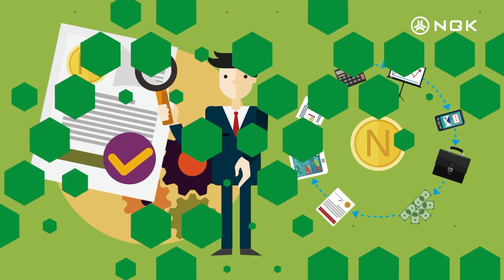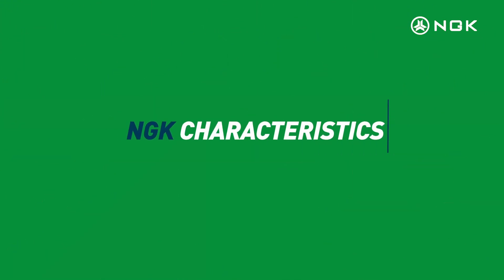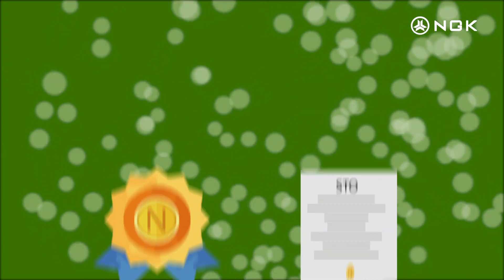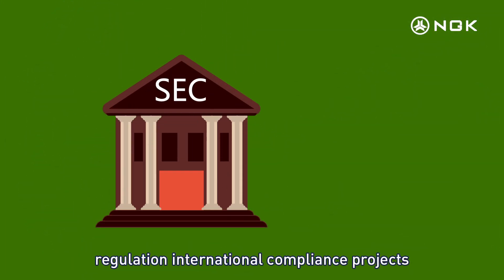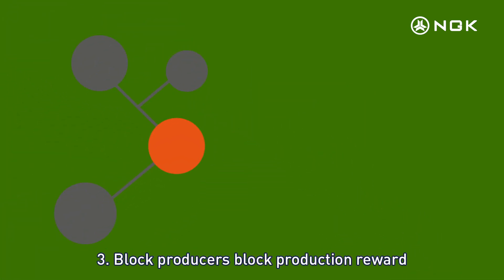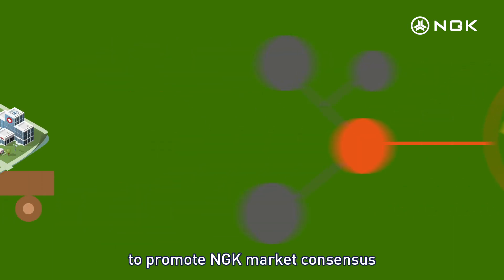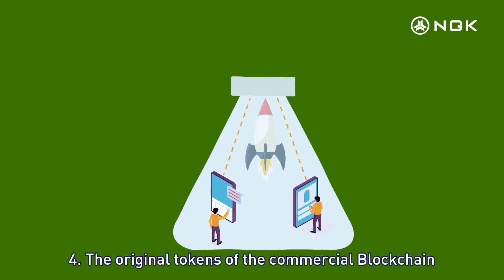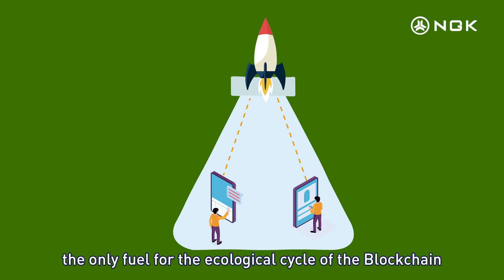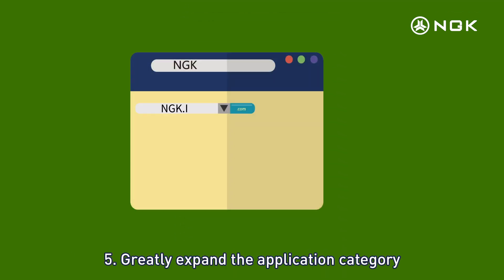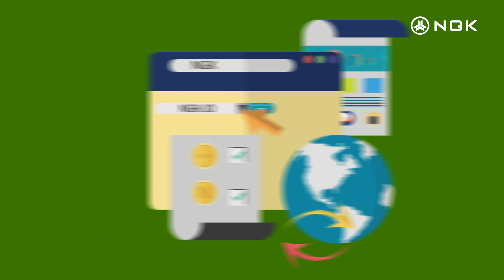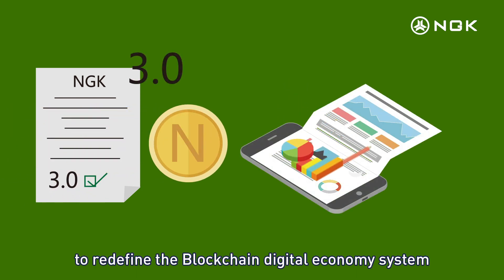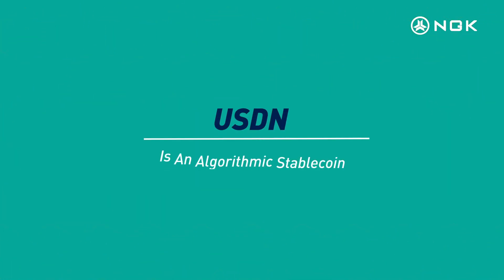The distribution mechanism is open and transparent, meaning NGK is a truly community-driven blockchain project. NGK characteristics: one, decentralized digital economic equity certificate STO issuance equity model; two, American SEC and international compliance; three, block producer rewards promoting NGK market consensus through community incentives; four, original token of commercial blockchain as the only fuel for the ecological cycle; five, greatly expanding the application category in digital finance; six, blockchain 3.0 token economy model redefining the digital economy system.